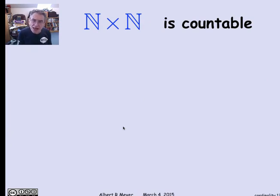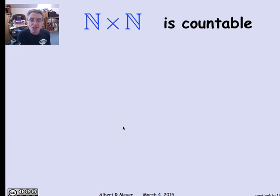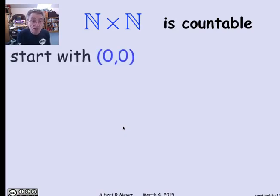Another example of a countable set is the pairs of non-negative integers. I need to find a bijection from the non-negative integers to pairs of non-negative integers. It's the same idea as we used with binary strings — there are a bunch of ways to prove it, but let's propagate the binary string idea.